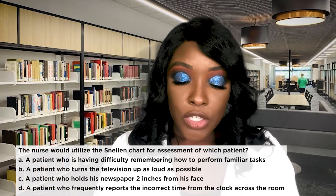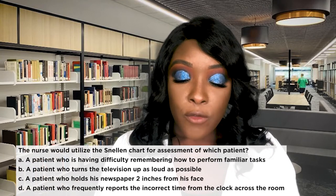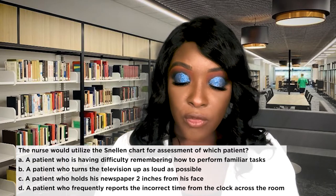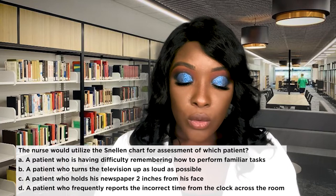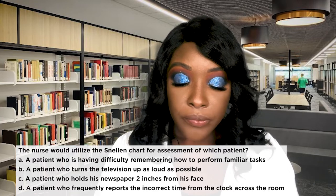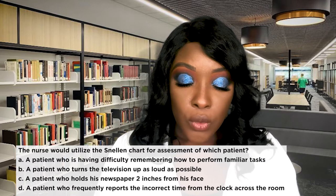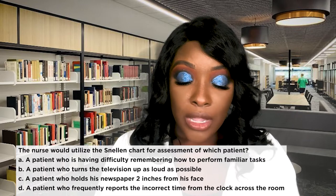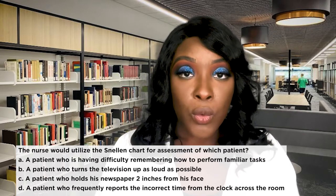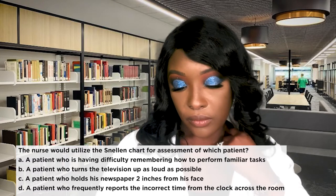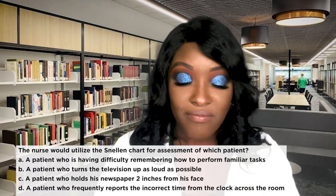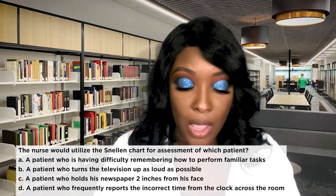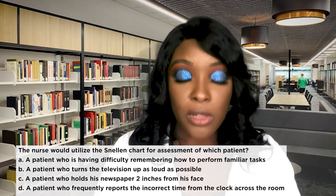The nurse would utilize the Snellen chart for assessment of which patient? A) a patient having difficulty remembering familiar tasks, B) a patient who turns the television up as loud as possible, C) a patient who holds his newspaper two inches from his face, or D) a patient who frequently reports the incorrect time from the clock across the room. The correct answer is D — the patient who reports the incorrect time from the clock across the room.